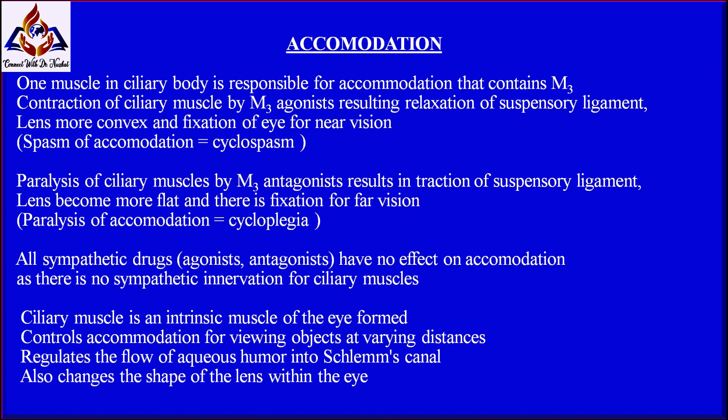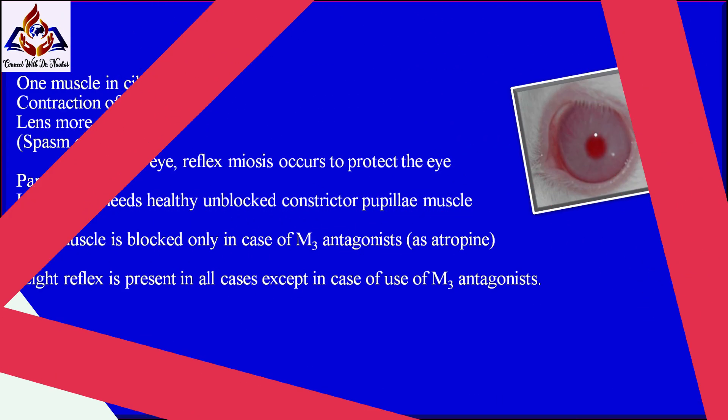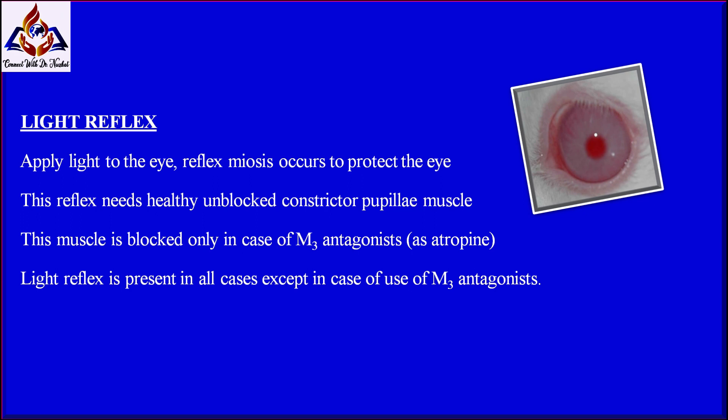The size of the pupil is controlled by the sphincter pupillae and dilator pupillae muscles. Regarding the light reflex: when we apply light to the eye, reflex miosis occurs to protect the eye. This reflex requires a healthy, unblocked constrictor pupillae muscle, which is blocked only by M3 antagonists such as atropine. Therefore, the light reflex is present in all cases except when an M3 antagonist is used.